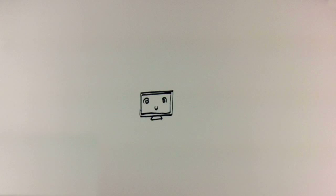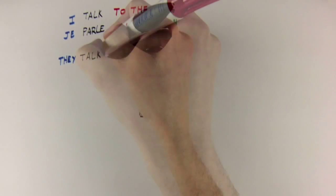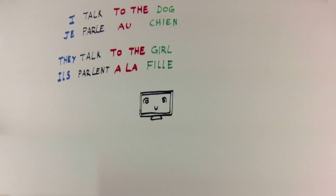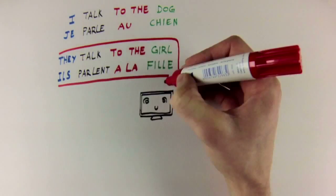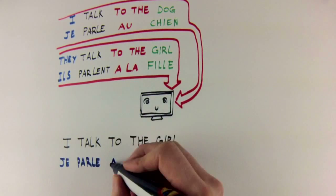So for example, if our parallel text contains the sentences 'I talk to the dog' and 'they talk to the girl' and their French translations 'je parle en chien' and 'il parle à la fille,' then the computer can learn from this data and then translate a sentence it has never seen before, like 'I talk to the girl.'